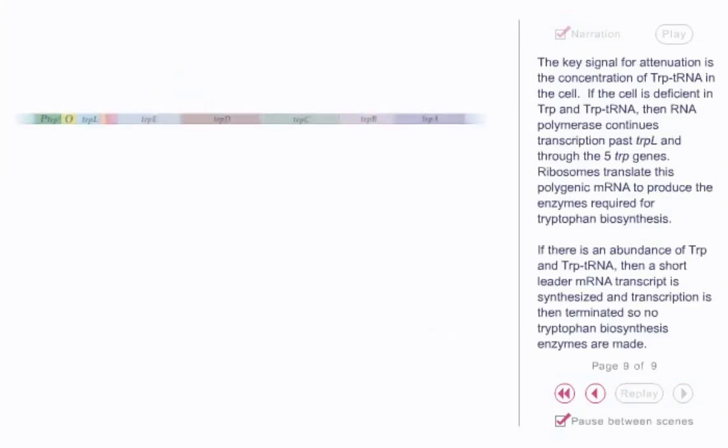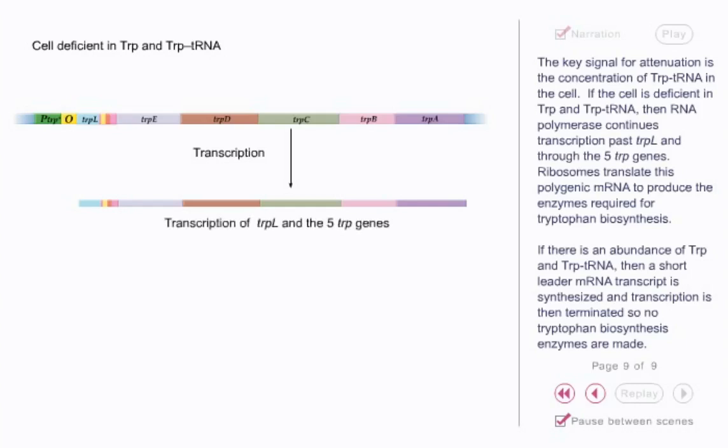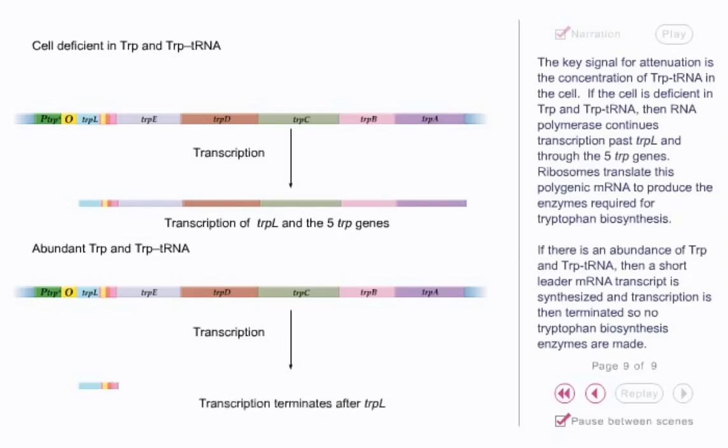The key signal for attenuation is the concentration of trp-tRNA in the cell. If the cell is deficient in trp and trp-tRNA, then RNA polymerase continues transcription past trpL and through the five trp genes. Ribosomes translate this polygenic mRNA to produce the enzymes required for tryptophan biosynthesis. If there is an abundance of trp and trp-tRNA, then a short leader mRNA transcript is synthesized and transcription is then terminated, so no tryptophan biosynthesis enzymes are made.